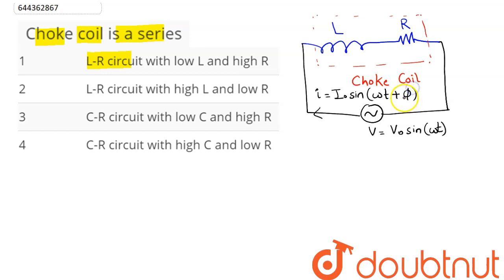So this is a choke coil. Choke coil is an inductance coil of very small resistance used for controlling current in an AC circuit. In an ideal choke coil, resistance is zero such that there is only inductance, and corresponding to this inductance, the inductive reactance is XL equal to omega L.